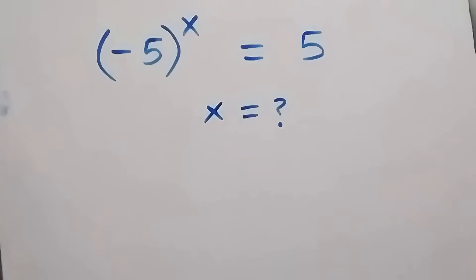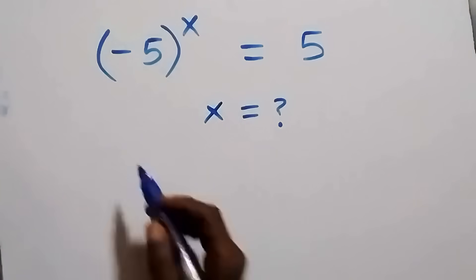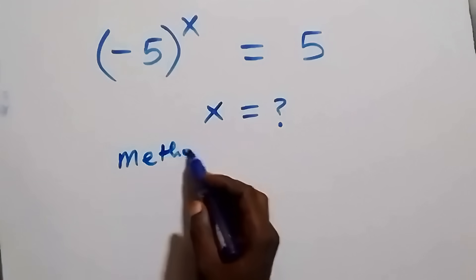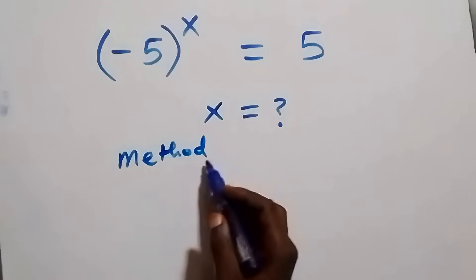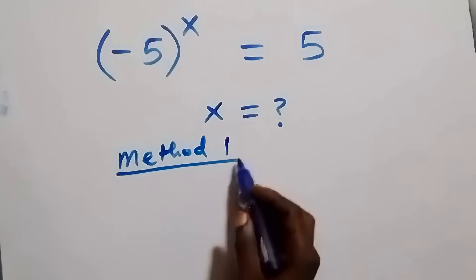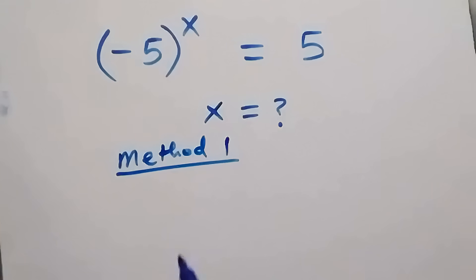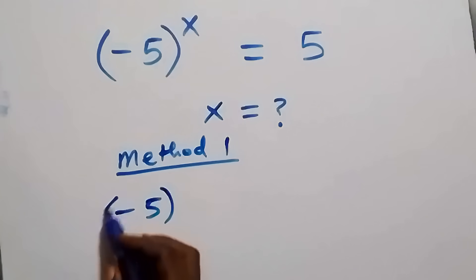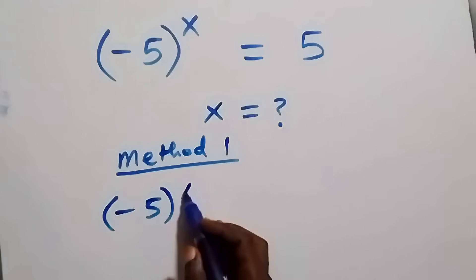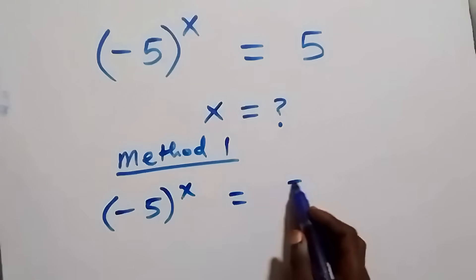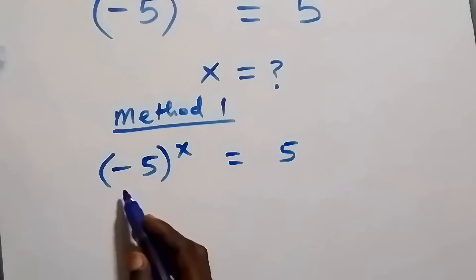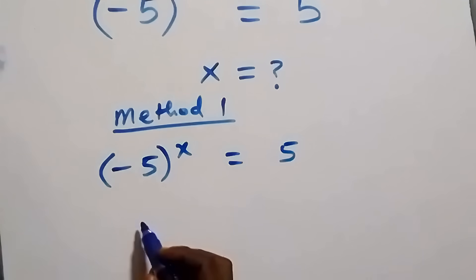Hello, you're welcome. Here we solve a nice math problem using two methods. The first method uses natural log. We have minus five raised to power x equals five, and we need to rewrite this using natural log.